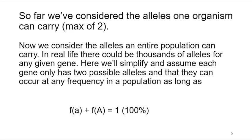So far in class we've been learning about Mendelian genetics, and in Mendelian genetics we're considering alleles within the context of one eukaryotic diploid organism. Each single organism can only carry a maximum of two alleles. Now we're going to take this idea and extrapolate it up and out — we're going to think about populations and consider all of the alleles for a given gene in an entire population.